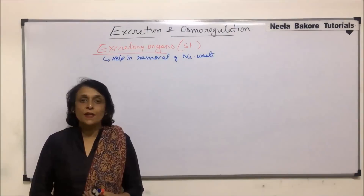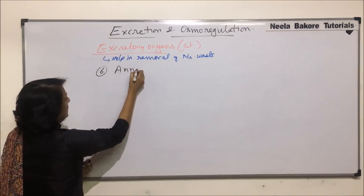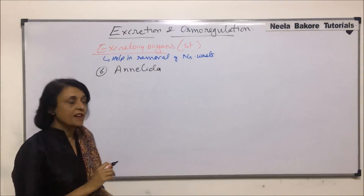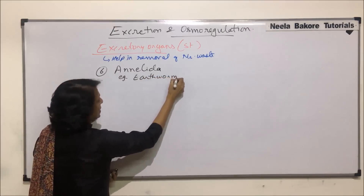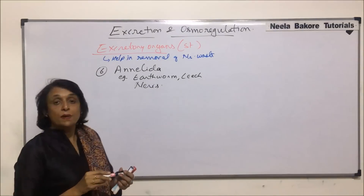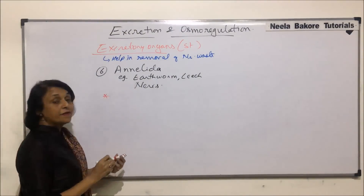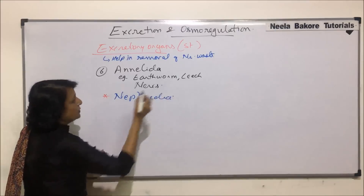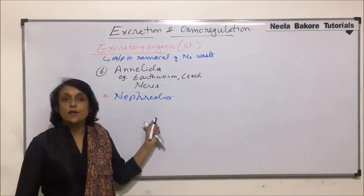We will now discuss the excretory organs in the next group, that is Annelida. In Annelida, we include earthworm, leeches, and Nereis. The excretory structures or organs which help are known as nephridia. These nephridia are of different types, which we will see a little later.